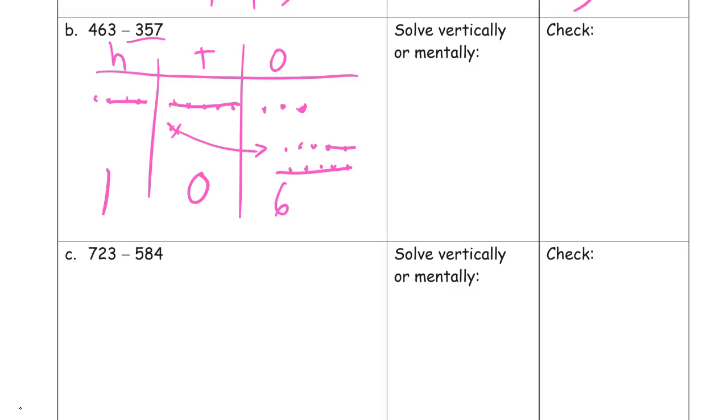Looking at this, there's no mental strategy that's just grabbing me here. That 357 is almost 360, but no. I'm going to do it vertically. 463 minus 357. Do I have enough ones? I don't, so I have to decompose a 10. Five tens left there, which will mean I'll have 10 more ones, 13. And now I have enough tens, I can subtract. 13 minus seven is six. Five minus five is zero. And four minus three is one. And I can look at this and see in my chip model I had to decompose a 10, and in my vertical method I also had to decompose a 10, so it's probably pretty good.